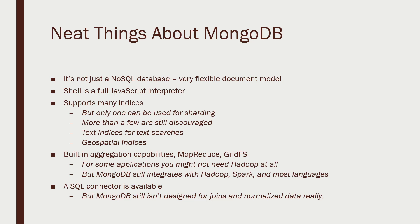You can also set up text indices for doing efficient text searches across MongoDB, as well as geospatial indices where you can do searches across latitudes and longitudes and figure out what database objects intersect a given position — which is a neat feature. MongoDB also has built-in aggregation capabilities. You can actually run MapReduce code on MongoDB itself, and it has its own file system built in called GridFS — that's kind of like HDFS, storing documents within MongoDB and chunking those documents up.